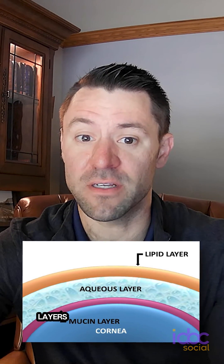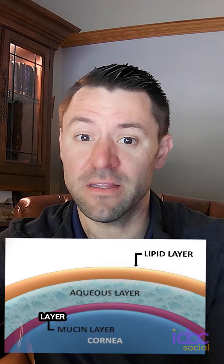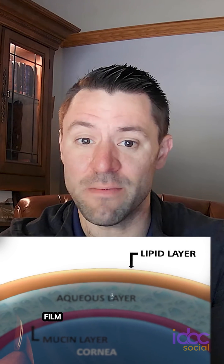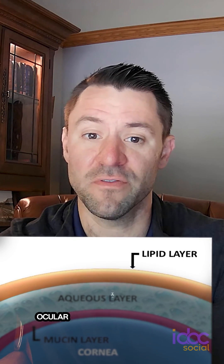The second component to dry eye disease is tear film quality, which is greatly influenced by lid architecture and the quality of the meibum. As we all know, the tear film has three layers, the topmost layer being the lipid layer, which is responsible for keeping the tear film stable on the ocular surface. If this layer is inadequate, we end up with early evaporation, which brings us to our second drop, Mybo.